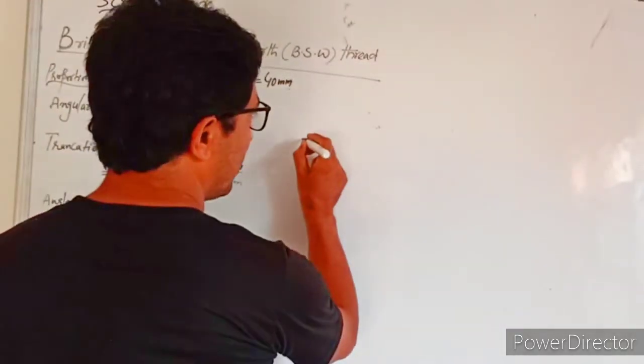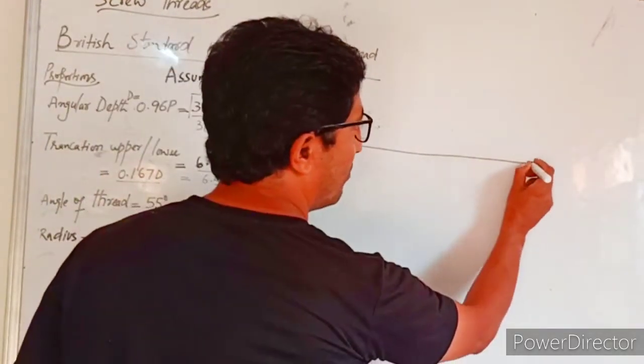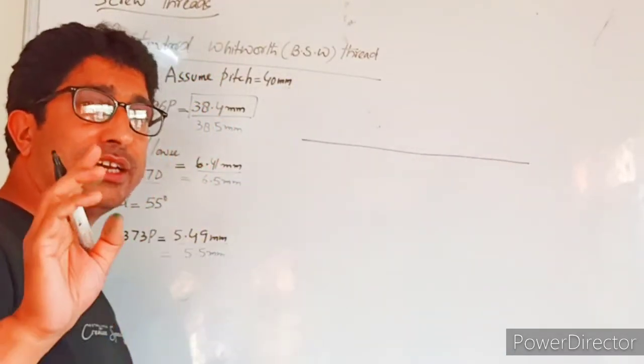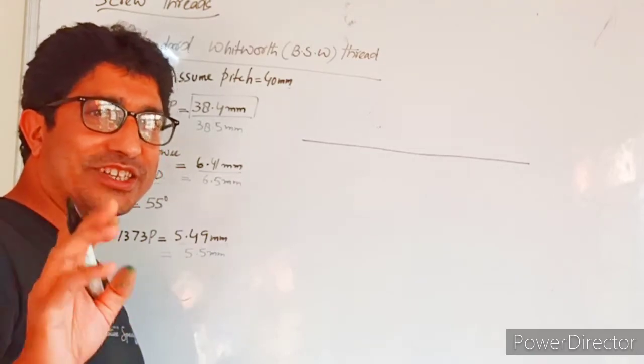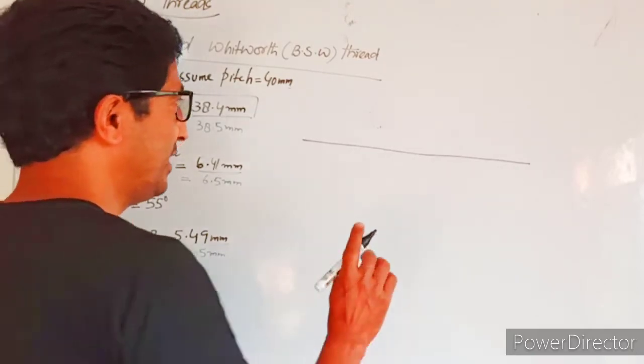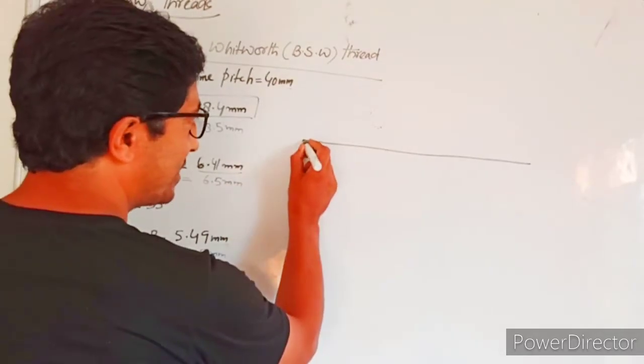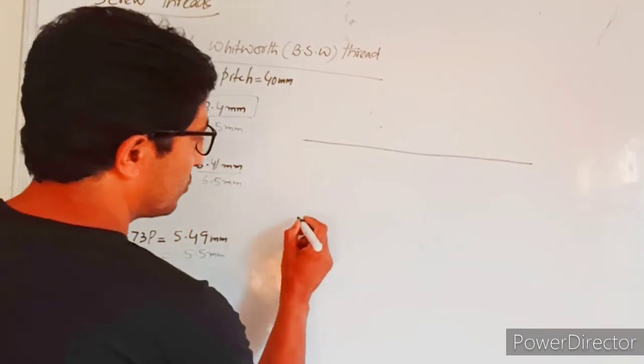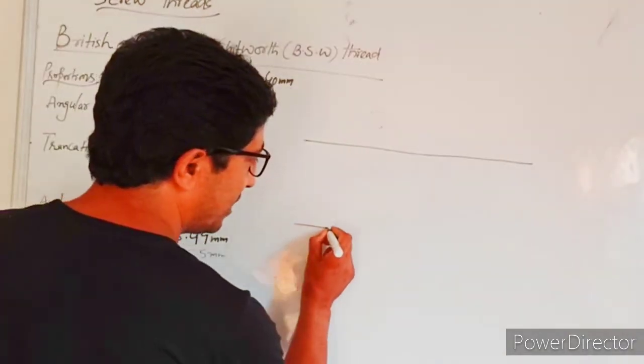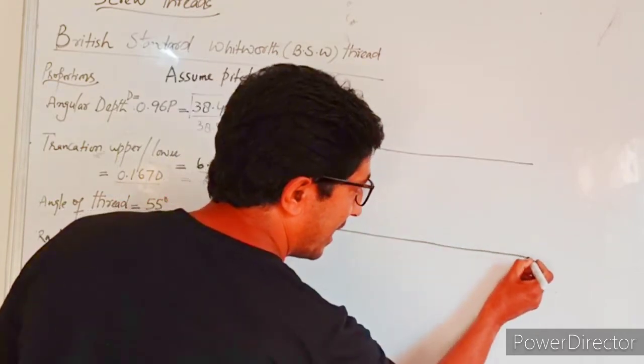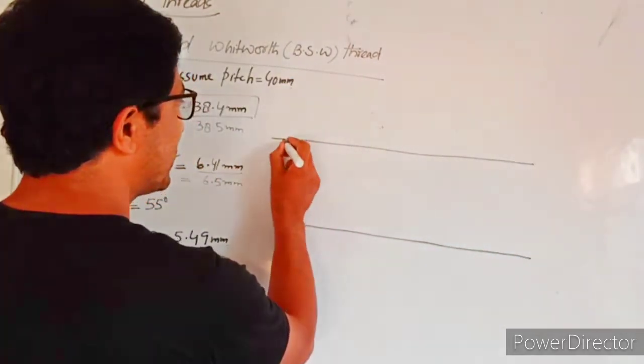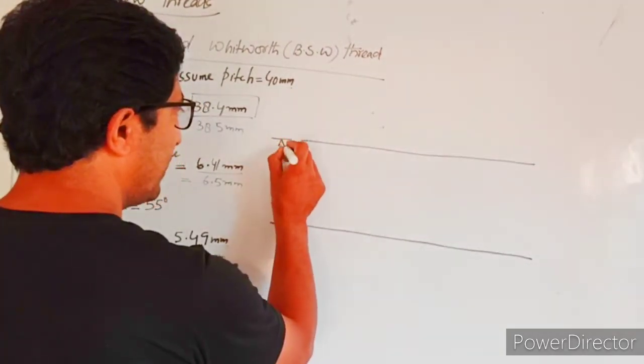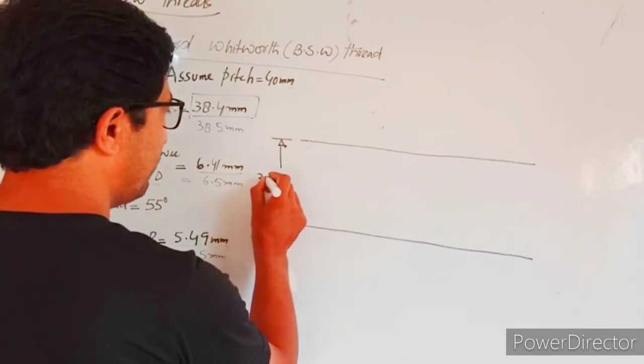First of all, what do we need to do? We need to draw a long line without any measurements. These are all construction lines, light lines. So we need to draw a line at 38.5mm. Then one more line. So the distance between these two lines is called the angular depth, that is 38.5mm.